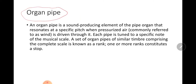First we will define organ pipe. An organ pipe is a sound-producing element of the pipe organ that resonates at a specific pitch when pressurized air is driven through it. Each pipe is tuned to a specific note of the musical scale. A set of organ pipes of similar timbre comprising the complete scale is known as a rank. One or more ranks constitute a stop.